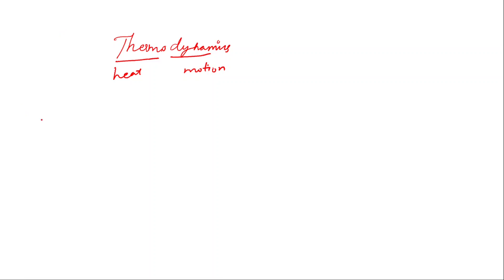An important term in thermodynamics is 'system.' A system can be anything we define — it could be me, a glass of water, or a volume of air in a room. Everything outside the system is called the surroundings.